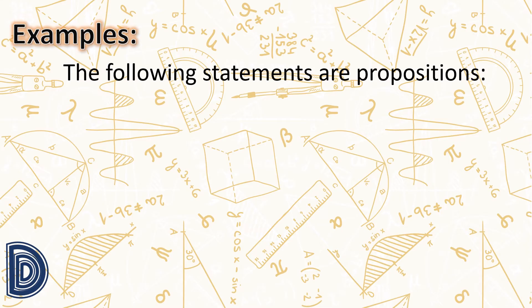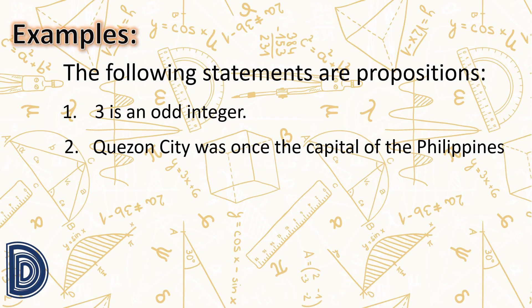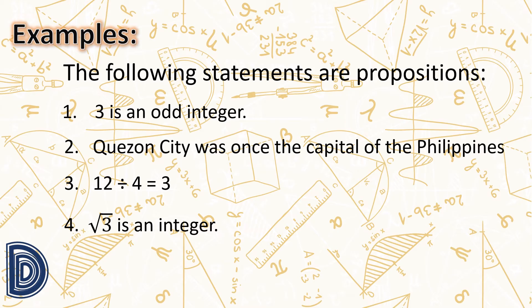Let us have some examples. The following statements are propositions. Number one: 'Three is an odd integer.' This is a proposition because it is a declarative sentence, and it can be true or false — this time, it is true. Number two: 'Quezon City was once the capital of the Philippines.' A declarative sentence, and this is true. Number three: 'Twelve divided by four equals three.' A mathematical sentence that is also declarative, and this is true. Number four: 'Square root of three is an integer.' A declarative sentence, and this is false. Still, this is a proposition.